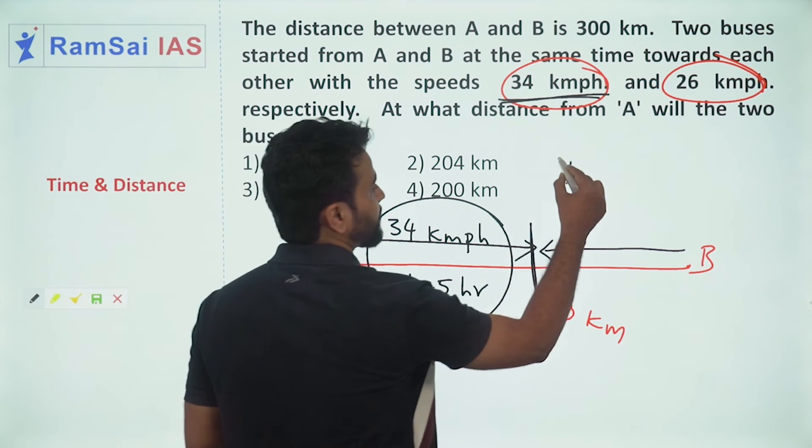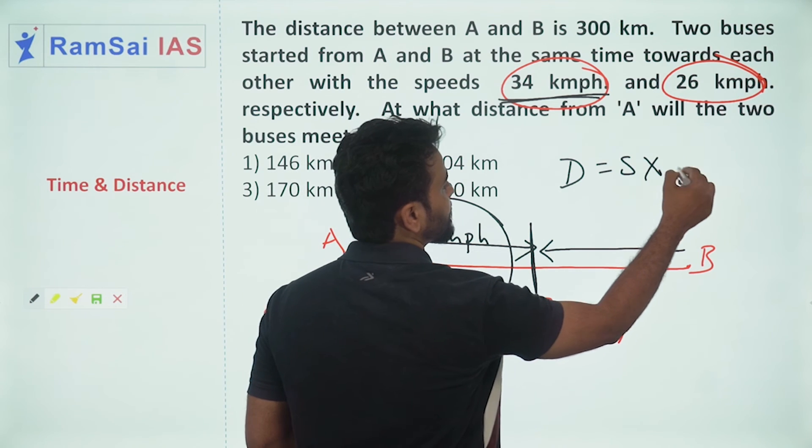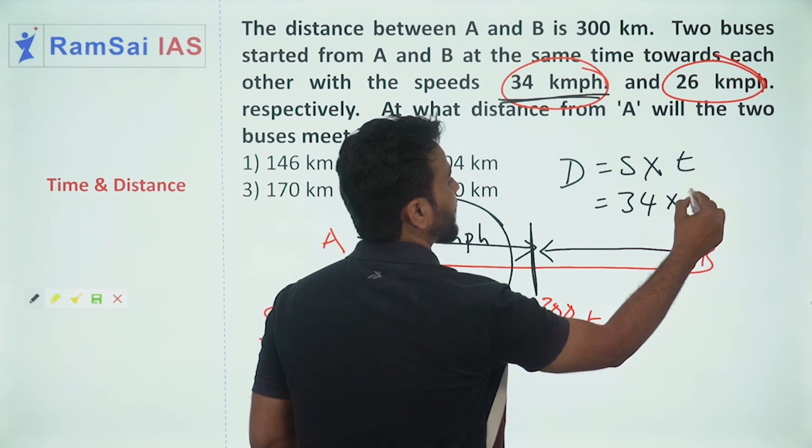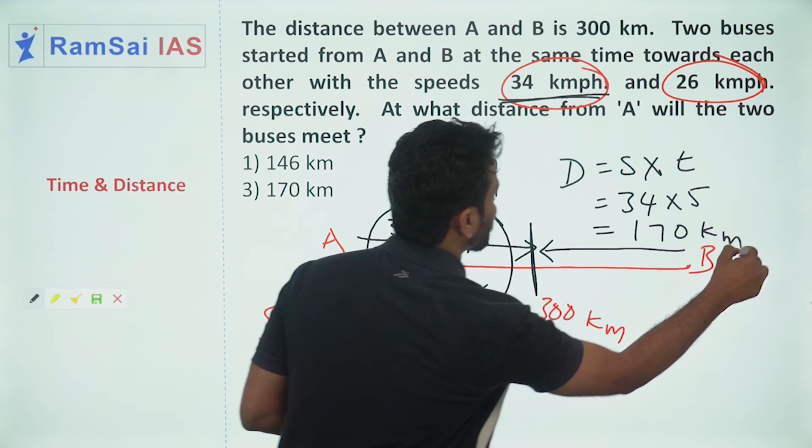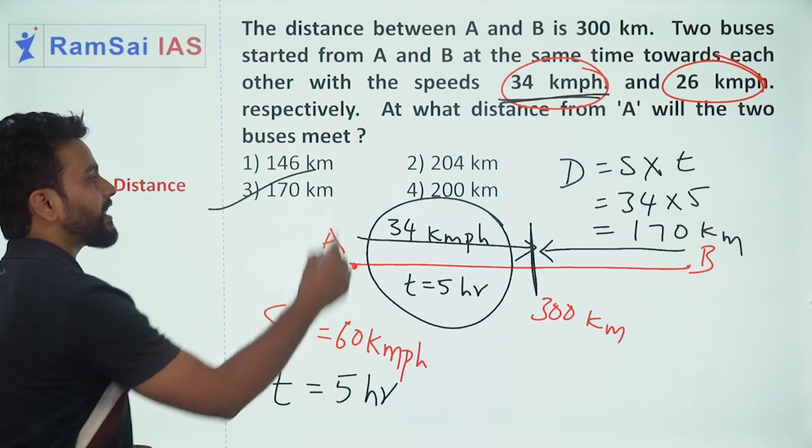Distance equals speed into time, so 34 into 5 equals 170 kilometers, which will be the answer. Which is in option C.